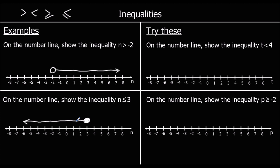Two questions for you to try — on a number line, show these inequalities. The first one: show the inequality t is less than 4. We do a circle at 4, we don't colour it in because it cannot equal 4, and it's less than, so it's on the smaller side — just an arrow in that direction.